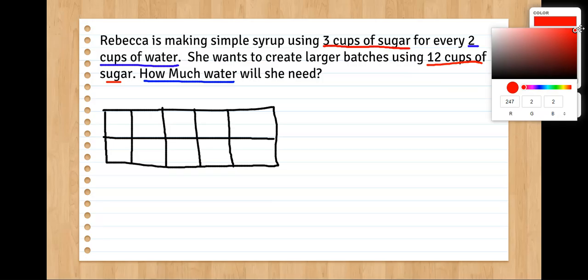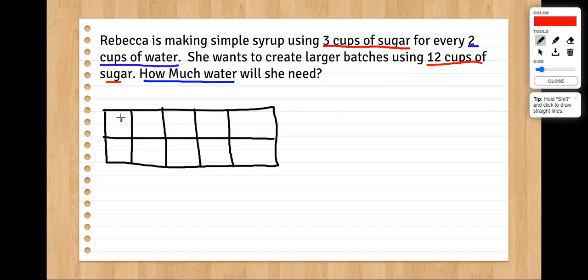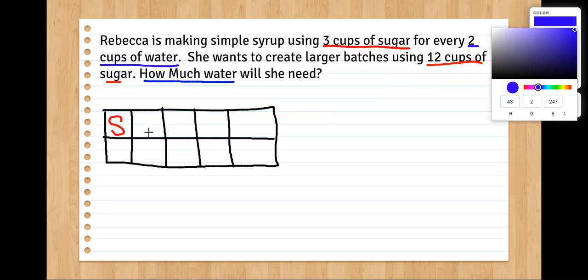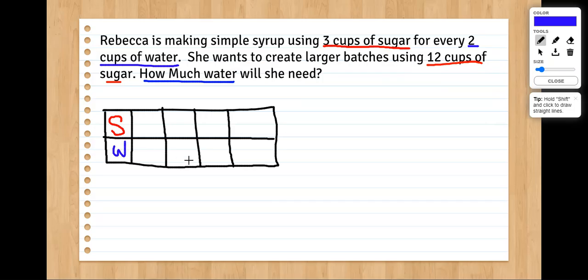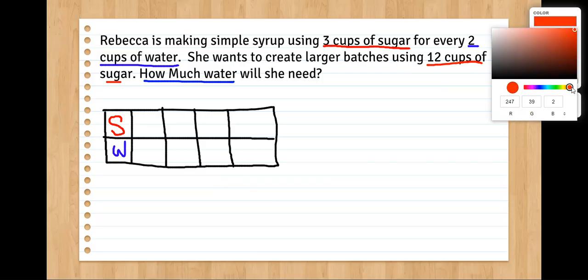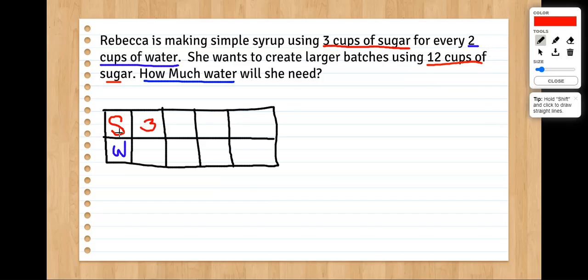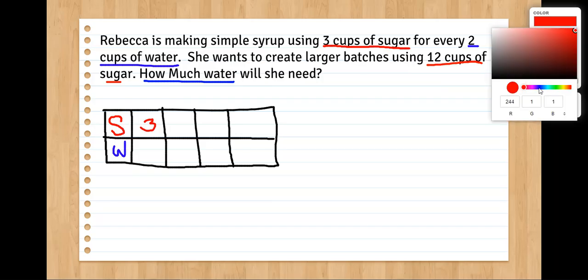Then we have to label this. This table is going to help us look at the proportional ratios of sugar to water. So I'm going to put an S on the top that stands for sugar and a W on the bottom to stand for water. It doesn't matter. I could have put the W on top and the S on the bottom. It's just important that I'm consistent. We'll start with the information that we were given. The first ratio or comparison tells us that recipe needs three cups of sugar for every two cups of water.